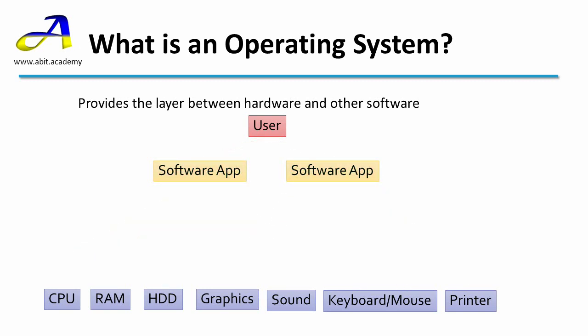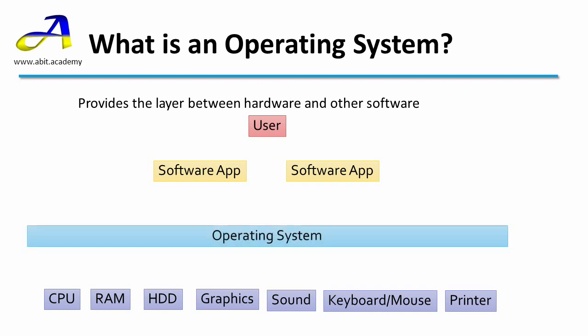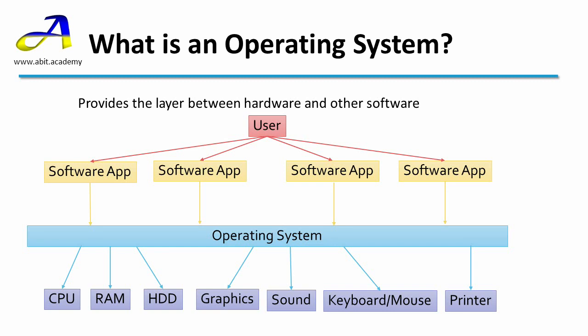This is where an operating system comes in. It provides a layer between the software and hardware. The drivers slot into the operating system, and so it manages the interaction with the hardware. This means that software only has to interact with the operating system. So if two apps are running, they each send requests to the operating system to access the hardware, which then manages queuing the requests so as not to confuse the hardware and the driver software. In this way, one operating system can manage multiple apps.